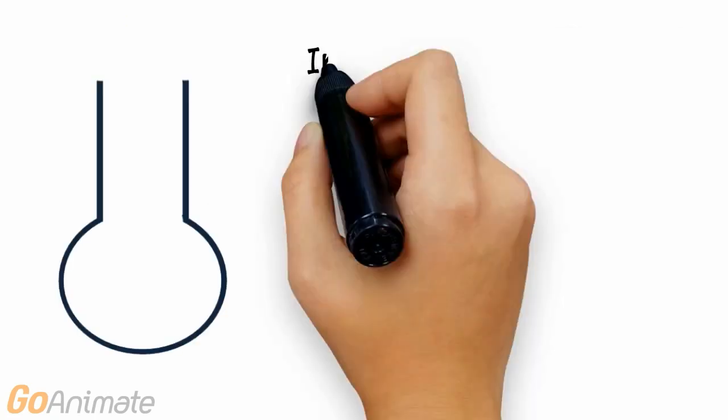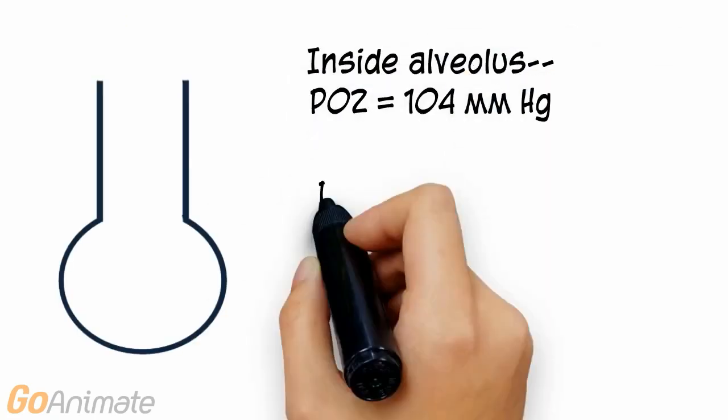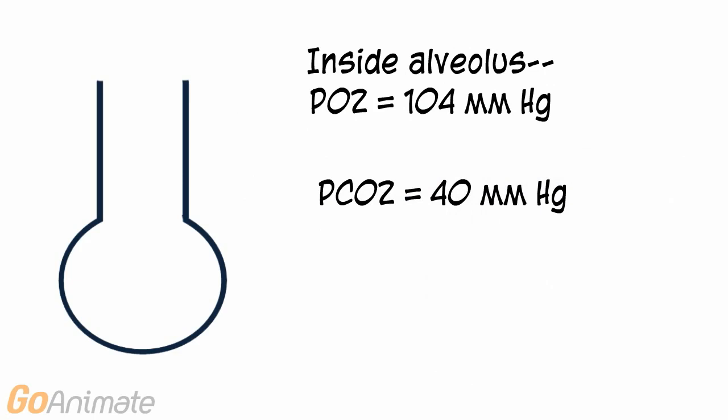It is important to know that gas moves from an area of higher partial pressure to an area of lower partial pressure. Let's see how this works in the respiratory and blood systems.